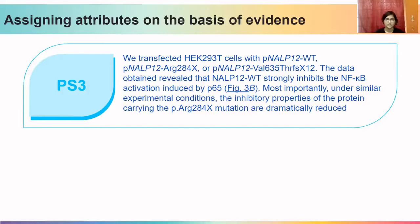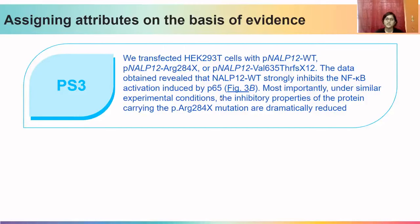On the basis of the HEK293 transfection result, I concluded that the attribute PS3 can be assigned to this variant. Importantly, this article had the variant represented in a very different format, with Arginine written in three-letter word format. Hence, if we had searched using the R284X annotation, we would never have reached this article. This demonstrates the importance of using multiple resources such as ClinVar and OMIM.